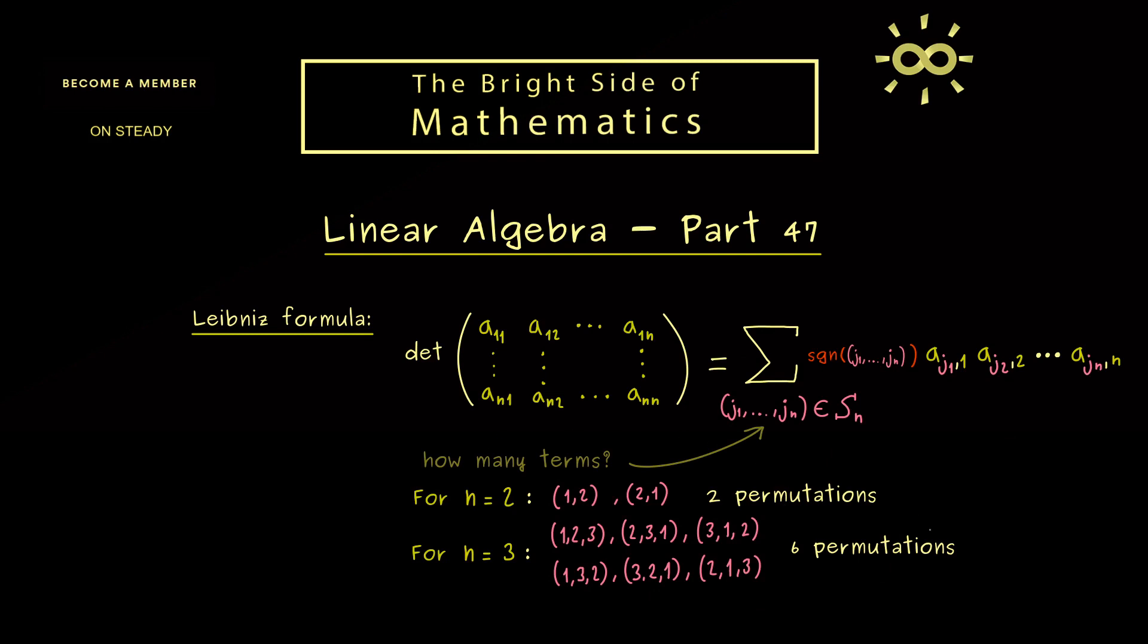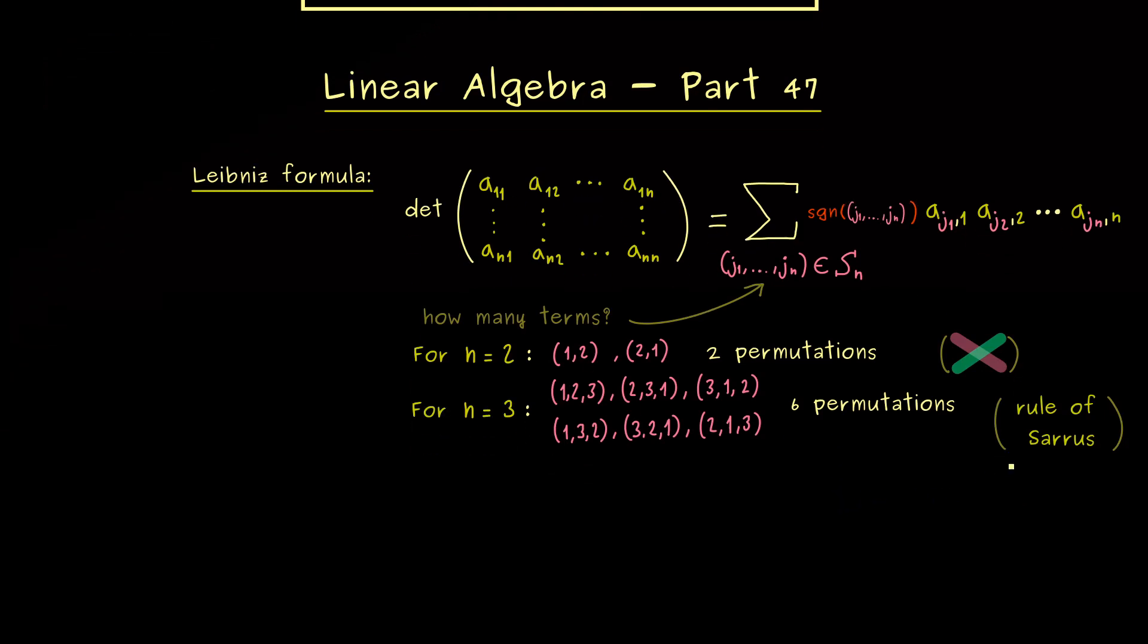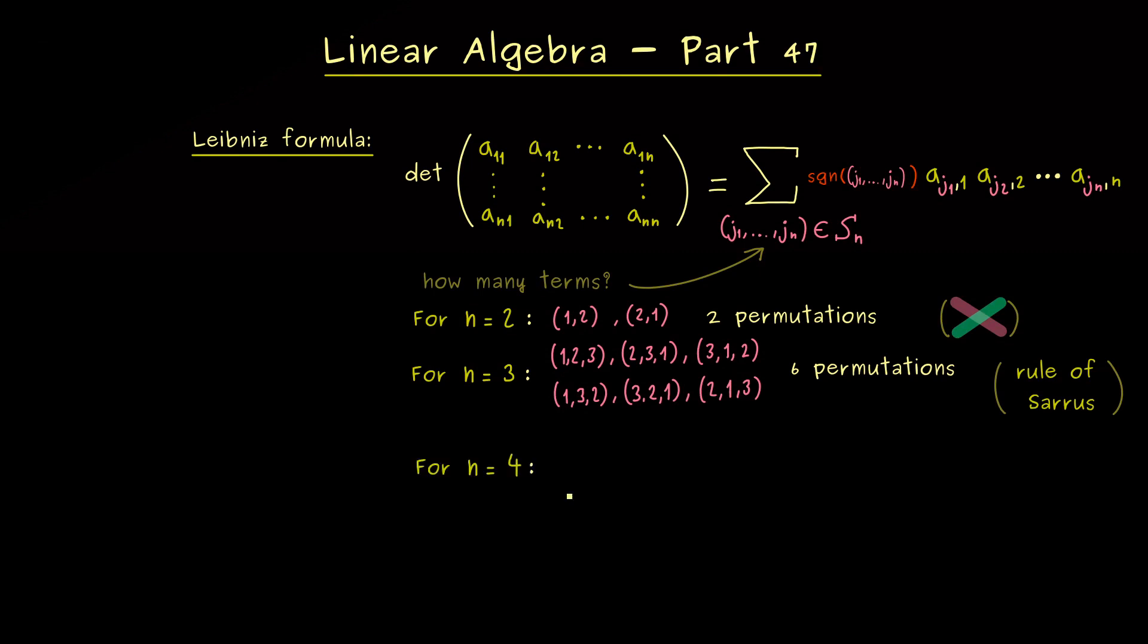In fact, you might remember that for the 2 times 2 case it was easy to remember. It was just about taking both diagonals with different signs. In other words, you don't need the general Leibniz rule to calculate a 2 times 2 determinant. And a similar thing we have for the 3 times 3 case and we will learn that today, it's called the Rule of Sarrus. However, as a warning, I can already tell you, this mnemonic here is not applicable to n equals 4.